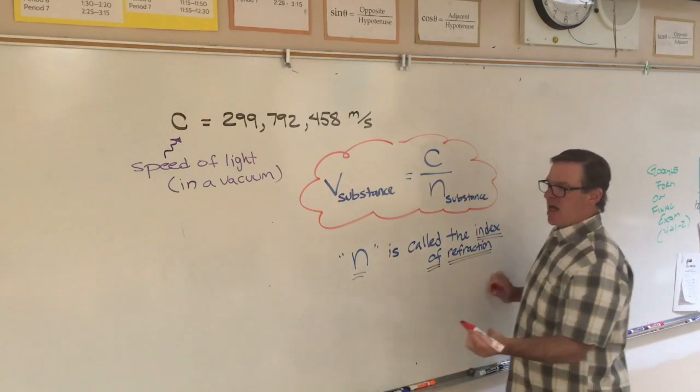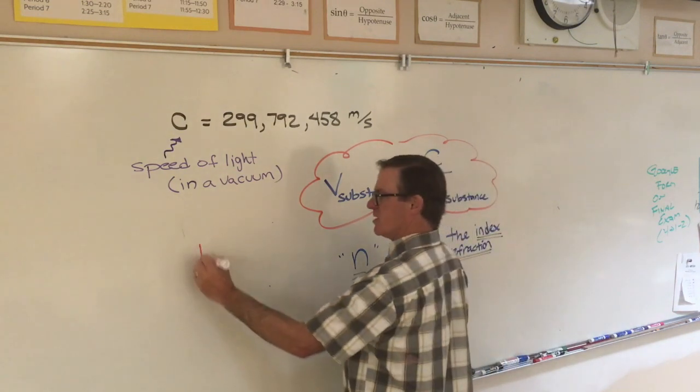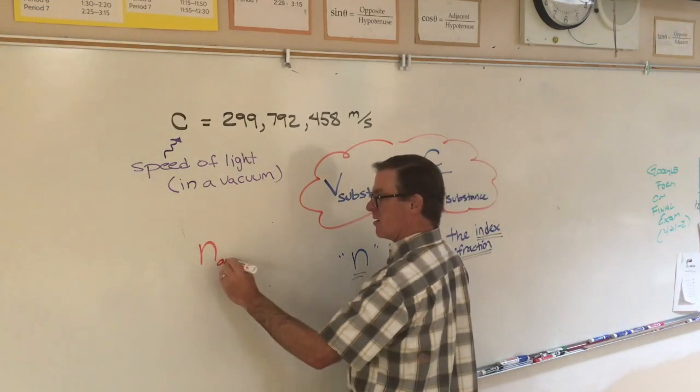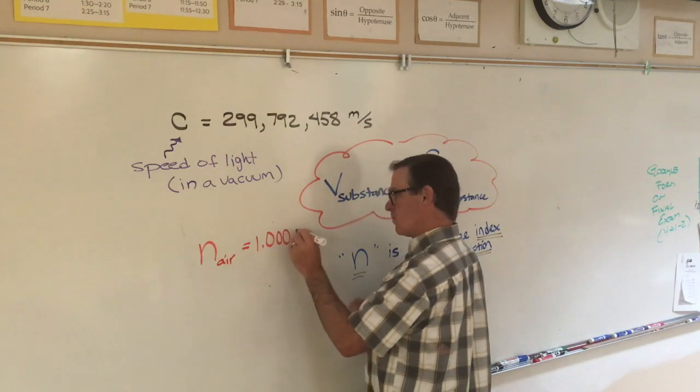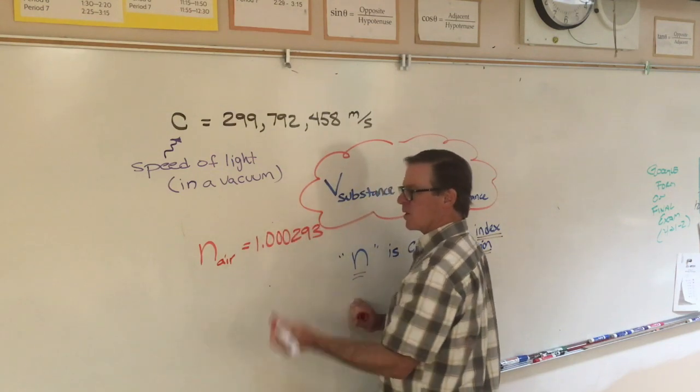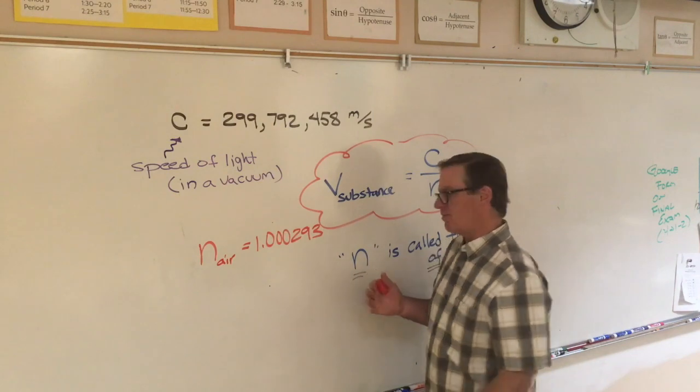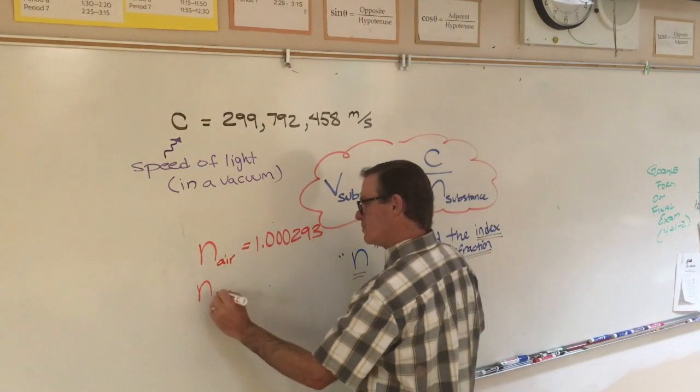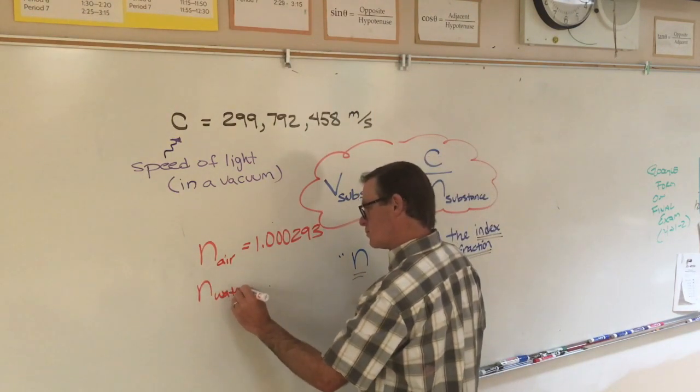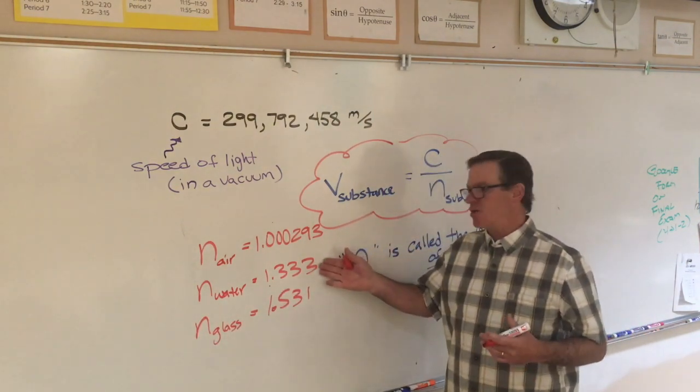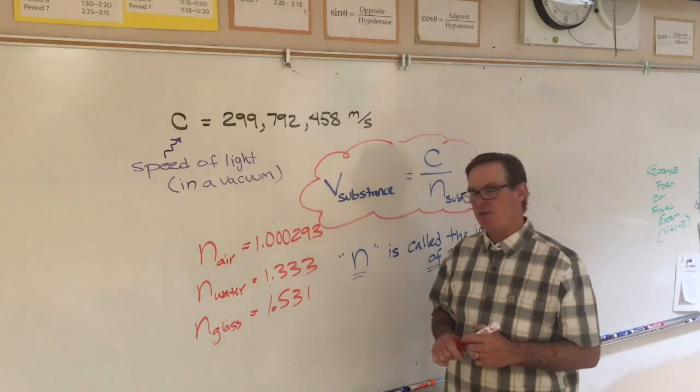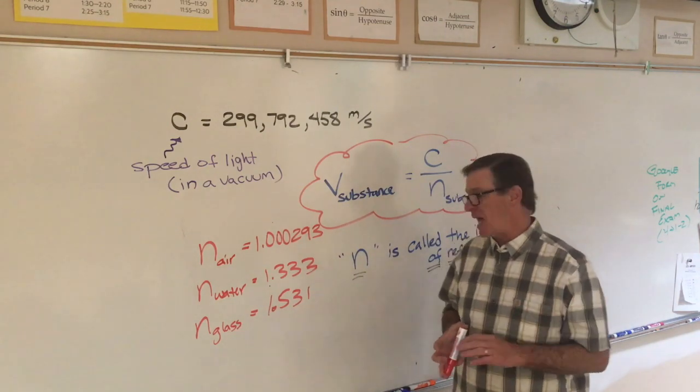Some common values for indices of refraction: the N of air is really close to 1, so we typically just use 1 for air. Water has an index of refraction of 1.333.